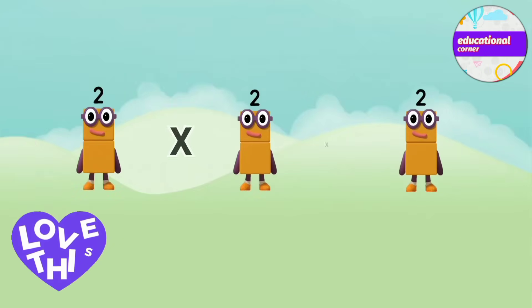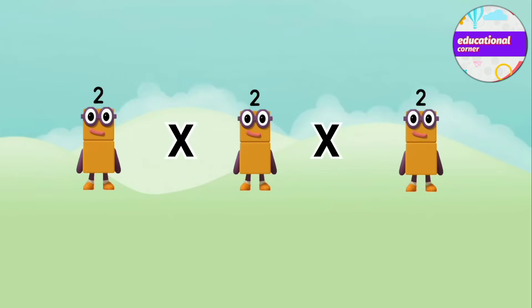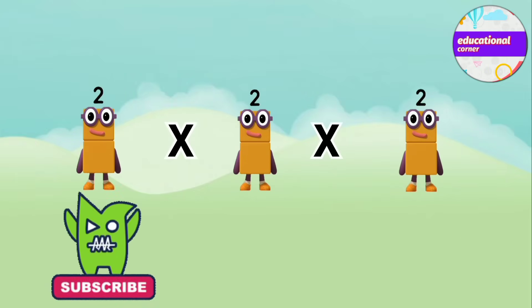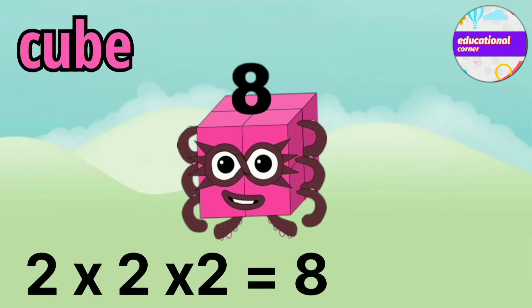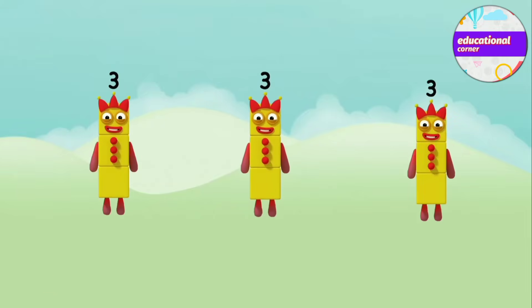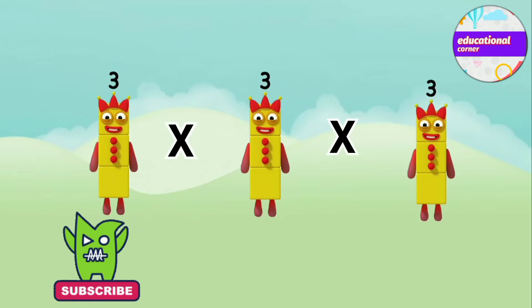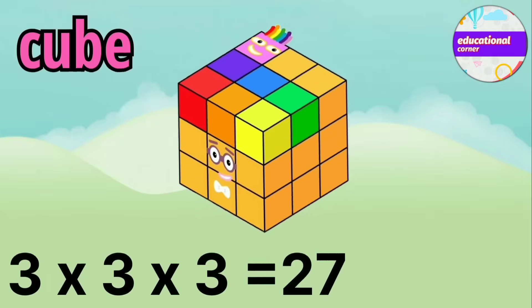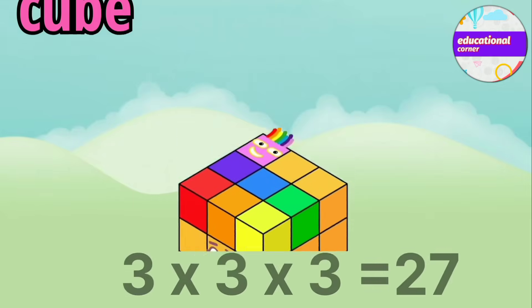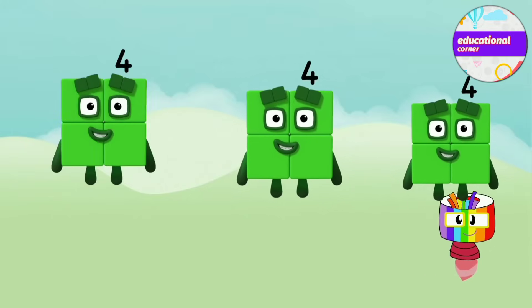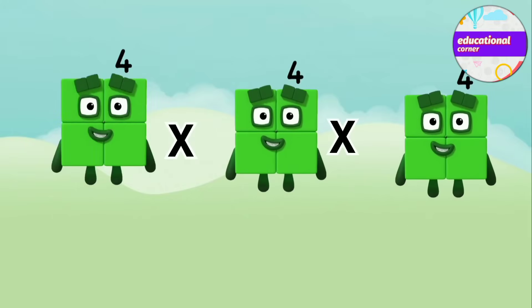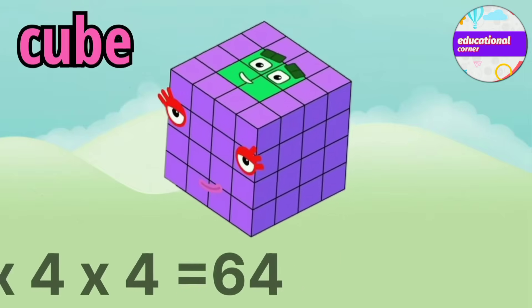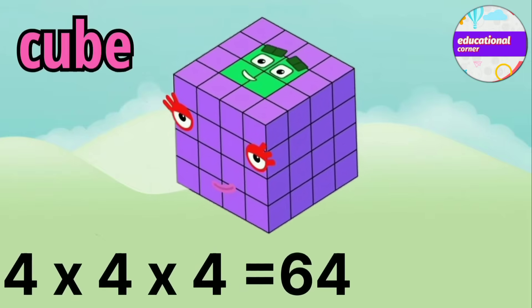2 x 2 x 2 equals 8. 3 x 3 x 3 equals 27. 4 x 4 x 4 equals 64.